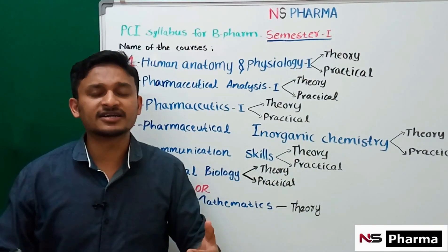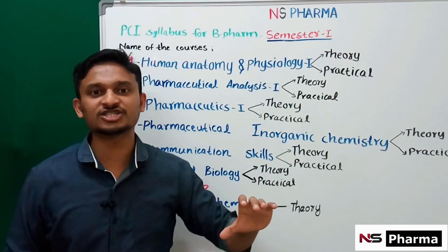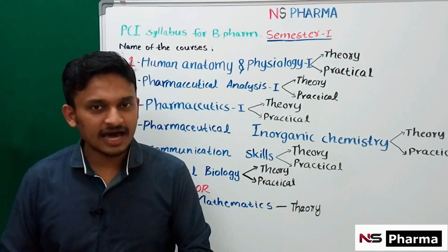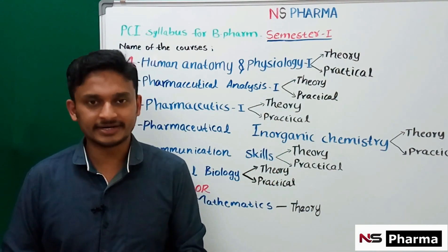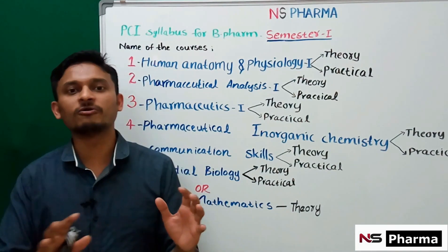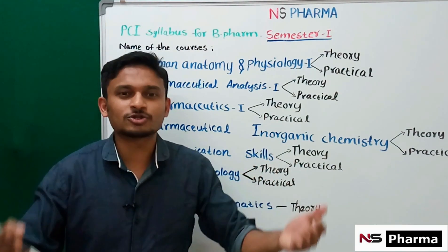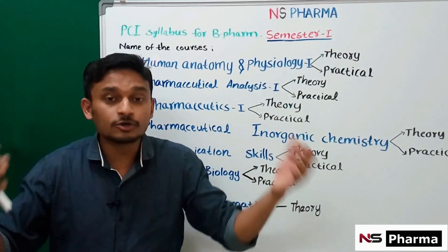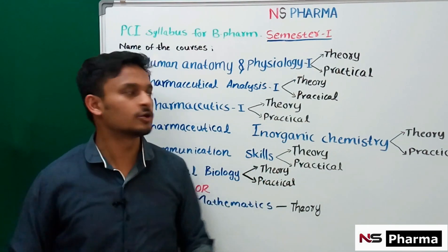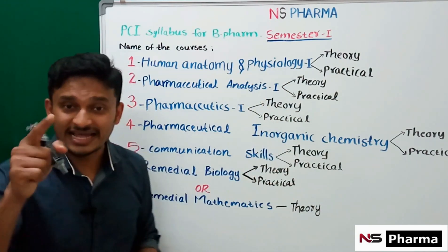In the practical part of Human Anatomy and Physiology One, we study the compound microscope and microscopic study of different tissues, identification of bones, Erythrocytic Sedimentation Rate (ESR), blood group identification, blood pressure measurement, and WBC and RBC count.